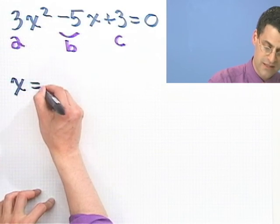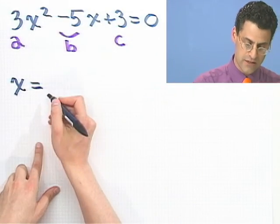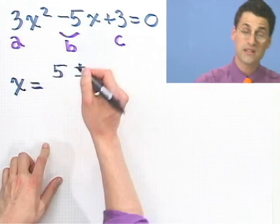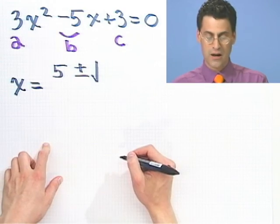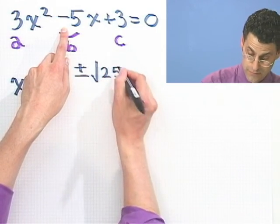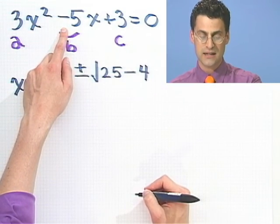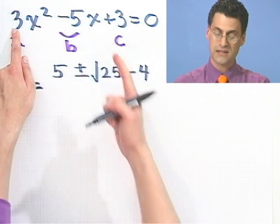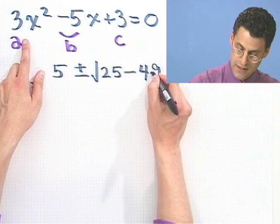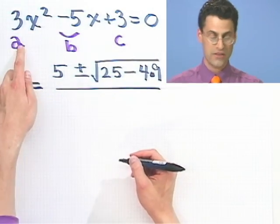You really want to memorize this — it's almost like a little mantra. x equals negative b plus or minus square root of b squared minus 4ac all over 2a. So x equals negative negative 5, which is 5, plus or minus the square root of b squared — I take minus 5 and square it, that's 25 — minus 4 times ac. a is 3 and c is 3, so that product is 9, so 4 times 9. All over 2a, so 2 times 3 is 6.